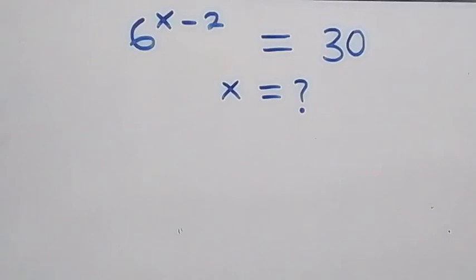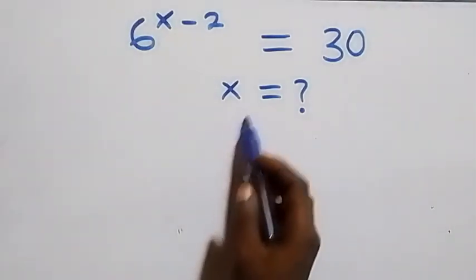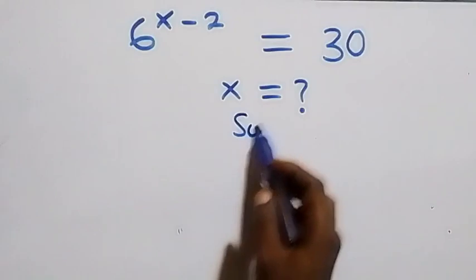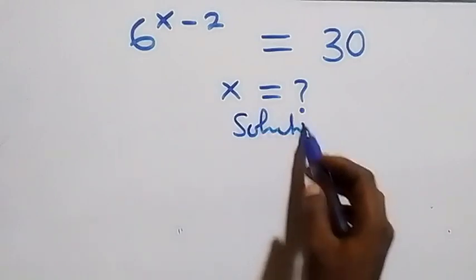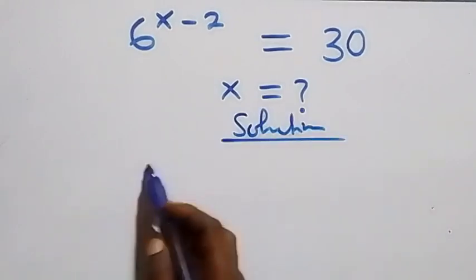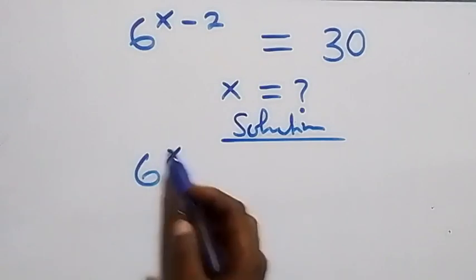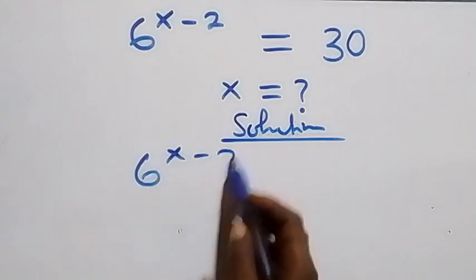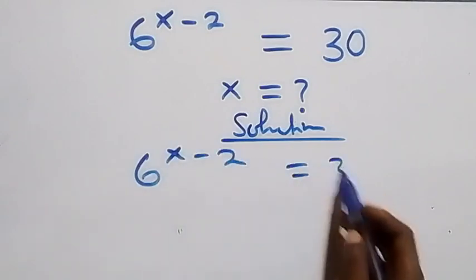Hello, you are welcome. How to solve this nice exponential equation. From what we have here, which is 6 raised to power x minus 2 equals 30.